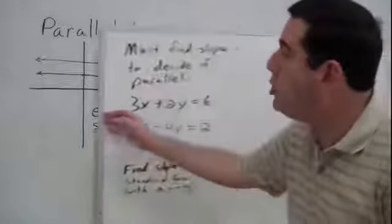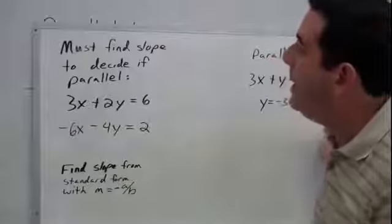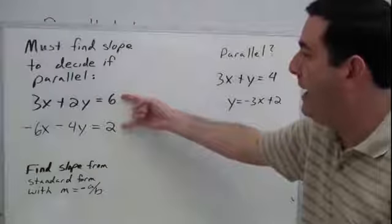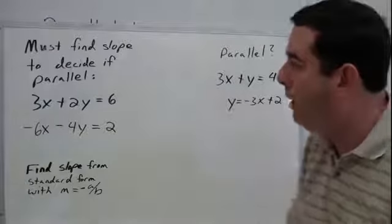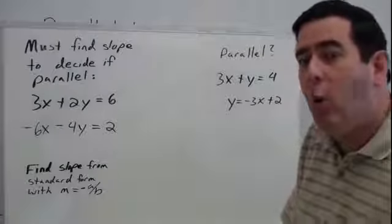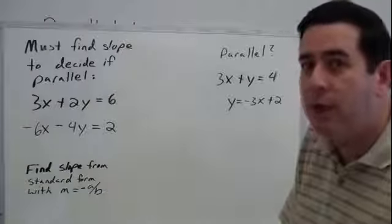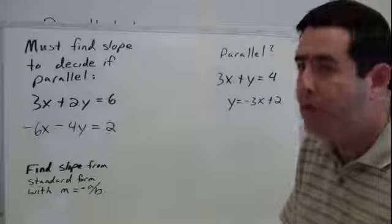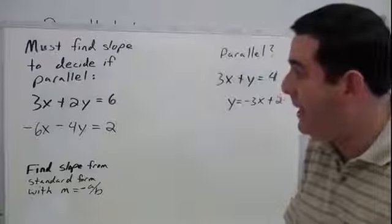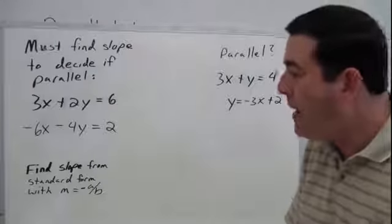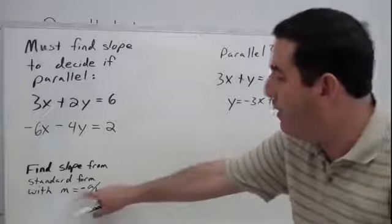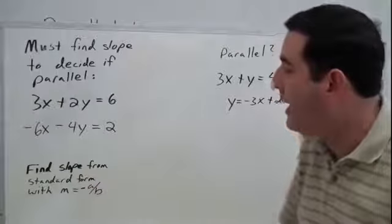Let's look at how you might be questioned about that. Here I've been given two equations of a line, and I want to know: are these two lines parallel or not? To determine if they are parallel, we need to know what the slope is, and if those slopes are the same, then we'll say they're parallel. These two lines are basically in standard form, so we can find the slope with our little trick: the slope is equal to the opposite of a divided by b.